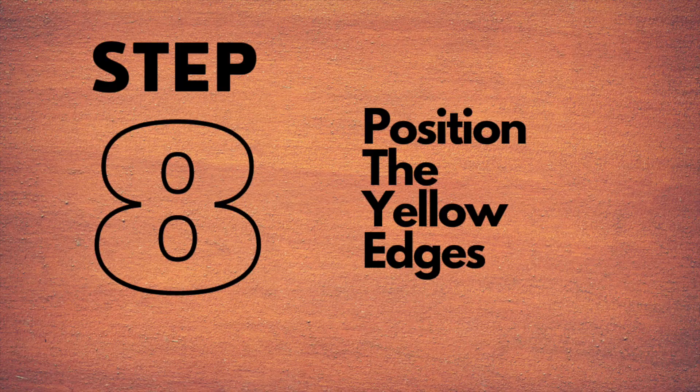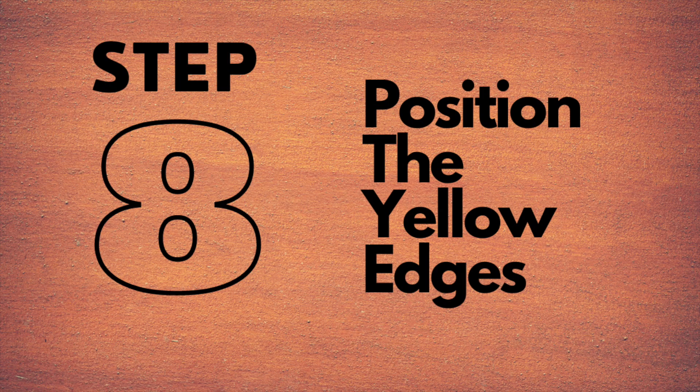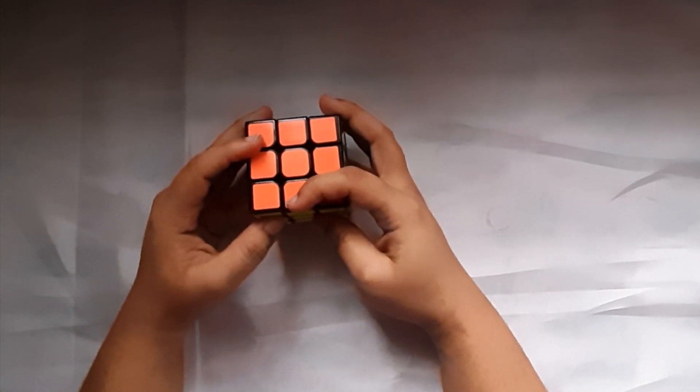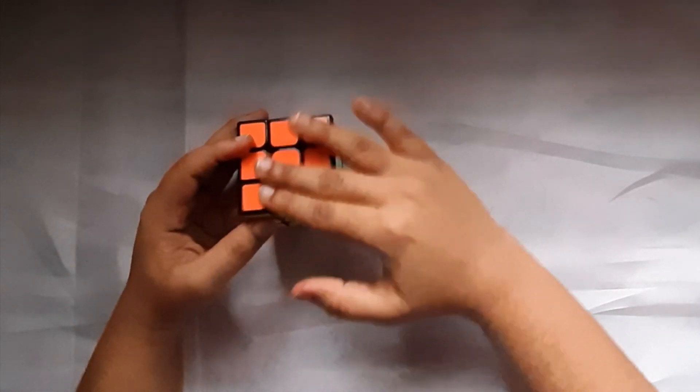By doing this, you might end up in three different situations. One: if your whole cube is solved, congratulations. But if it didn't, then this is what you're going to do. The second condition is when you have one side solved and the other three edges don't match. If you are one of those who have none of your edges matched, that's the third condition. So if you have one of your edges matched like this, just keep it on your back and observe the three unmatched edges.